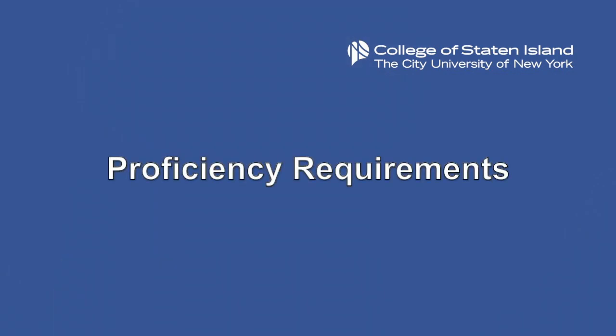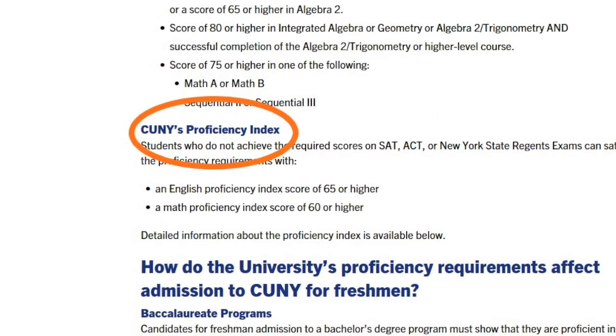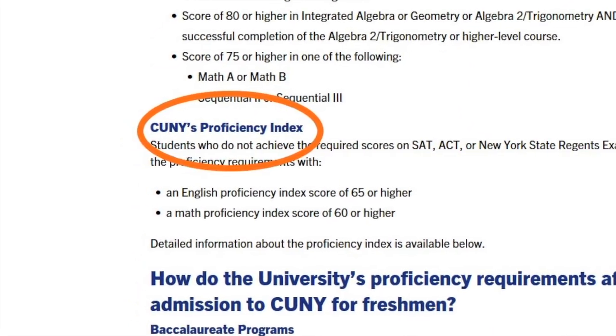All new students entering CSI must demonstrate proficiency in English and mathematics by meeting benchmark scores on Regents or with college-level English and math courses. In the past, applicants who did not meet those benchmarks were required to take assessment or placement tests. Rather than using assessment tests, CUNY now uses a proficiency index that looks at various academic factors from your high school transcript.